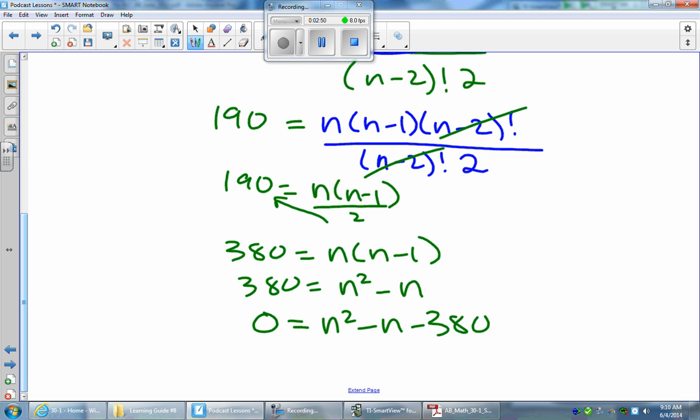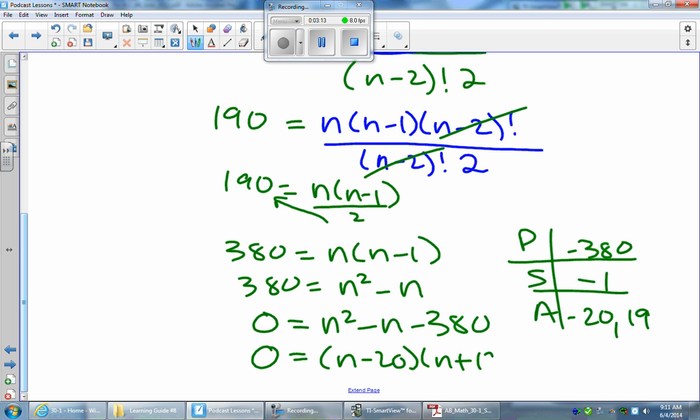Now, you know, the numbers look pretty large here. It is actually factorable. The product here is negative 380. The sum is negative 1. The two numbers that fit these two is actually negative 20 and positive 19. So here are my two binomial factors. We have N minus 20 and N plus 19.